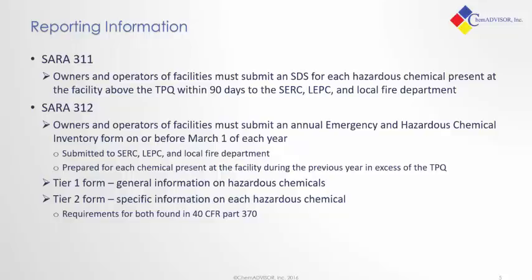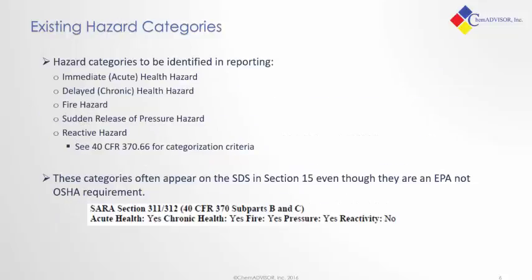Looking at the Tier 2 form and its more specific information: currently, we have five existing hazard categories under SARA. Two of them are health hazard categories and three of them are physical. Under health, we look at acute and chronic health hazards. Under physical, we're looking at fire, pressure, and reactivity hazards. The specific criteria for each of those can be found in the Code of Federal Regulations — I'll give a little more information on that on the next slide.